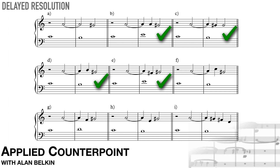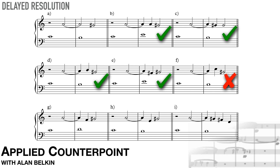F poses a problem — can you see why? The intervening C is dissonant with the cantus. However, the G-sharp does not resolve the high C; it's just left hanging. So it distracts from the suspension rather than enhancing it. In G, the intervening F is consonant with the cantus, but it creates an augmented sixth when moving to the following G-sharp, which is awkward to sing.